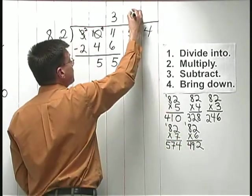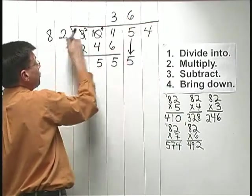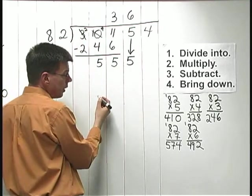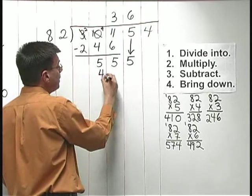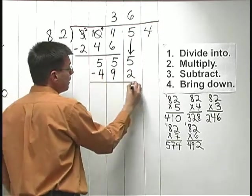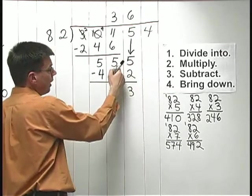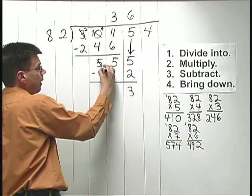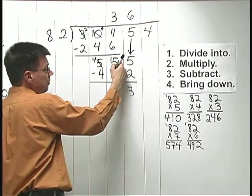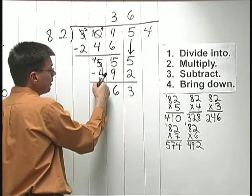So, I write the 6 above the 5 that I just brought down. And then I multiply. 6 times 82. 6 times 82 is 492. Just figure that out. And I subtract. 5 minus 2 is 3. 5 minus 9 I can't do. So, I borrow. 5 becomes 4. And the 5 here becomes 15. 15 minus 9 is 6. 4 minus 4 is 0.